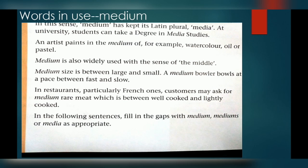Medium also refers to a person who is between fast and slow — for example in cricket, a medium bowler is between a fast bowler and a slow bowler. In restaurants, particularly French ones, customers may ask for medium-rare meat, which means between well-cooked and lightly cooked. Well-cooked aur lightly cooked food ke beech wale food ko bhi medium-rare meat kaha jata hai.